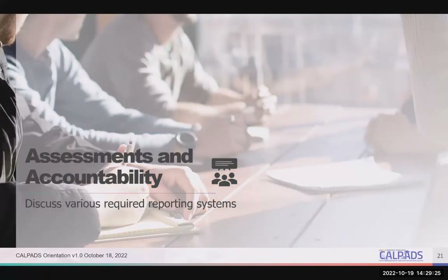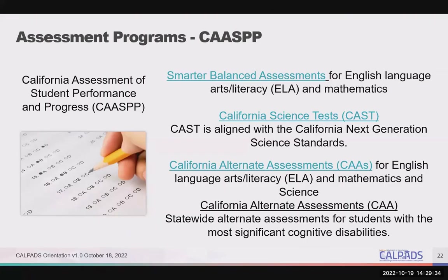On to assessments and accountability. Here we'll take a look at California's assessments and accountability systems. First we have CAASPP — C-A-A-S-P-P — the California Assessment of Student Performance and Progress.